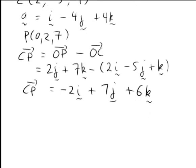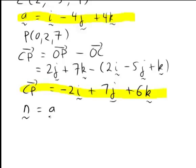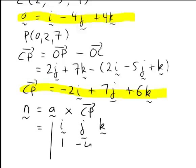So the vector CP equals negative 2i plus 7j plus 6k. We now have two vectors, a and CP, that both lie on the plane. We can take the normal vector N as the cross product a × CP, set up as a determinant with i, j, k in the first row, coefficients of a (1, -4, 4) in the second row, and coefficients of CP (-2, 7, 6) in the third row.